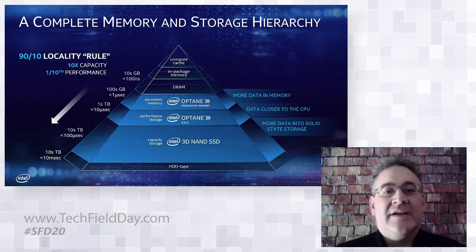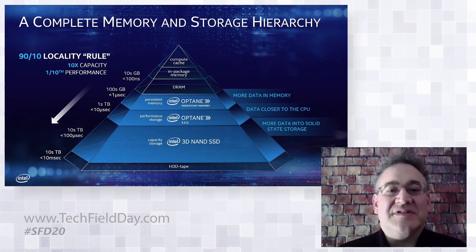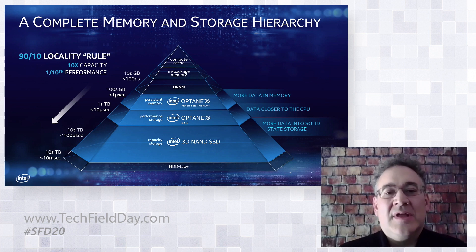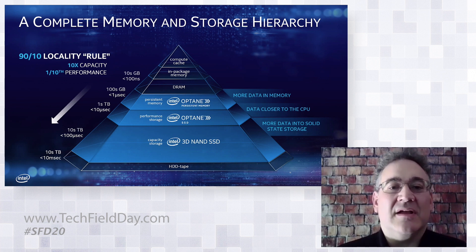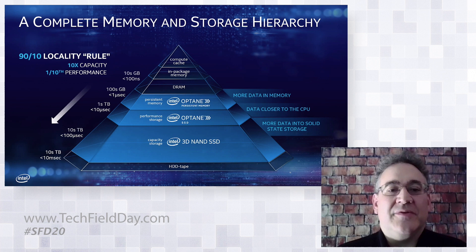Looking at this pyramid, at the top is the highest performance memory media, and at the bottom is the most dense. In the old von Neumann compute architecture, you had a CPU, DRAM, and some sort of storage device — a hard disk drive, or even tape. Since then, Intel added many layers of cache in the CPU. The memory storage hierarchy tends to follow the 90-10 locality rule: about 10% of the data at a lower level will benefit from being at a higher performance level. Going the other direction, a 10x improvement in performance allows you to create a new layer — going down creates 10x capacity, going up requires 10x performance.